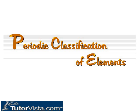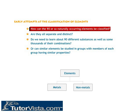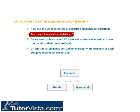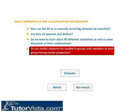Periodic Classification of Elements: Making Order out of Chaos. How can the 90 or so naturally occurring elements be classified? Are they all separate and distinct? Do we need to learn about 90 different substances as well as thousands of their combinations, or can similar elements be studied in groups with members of each group having similar properties?